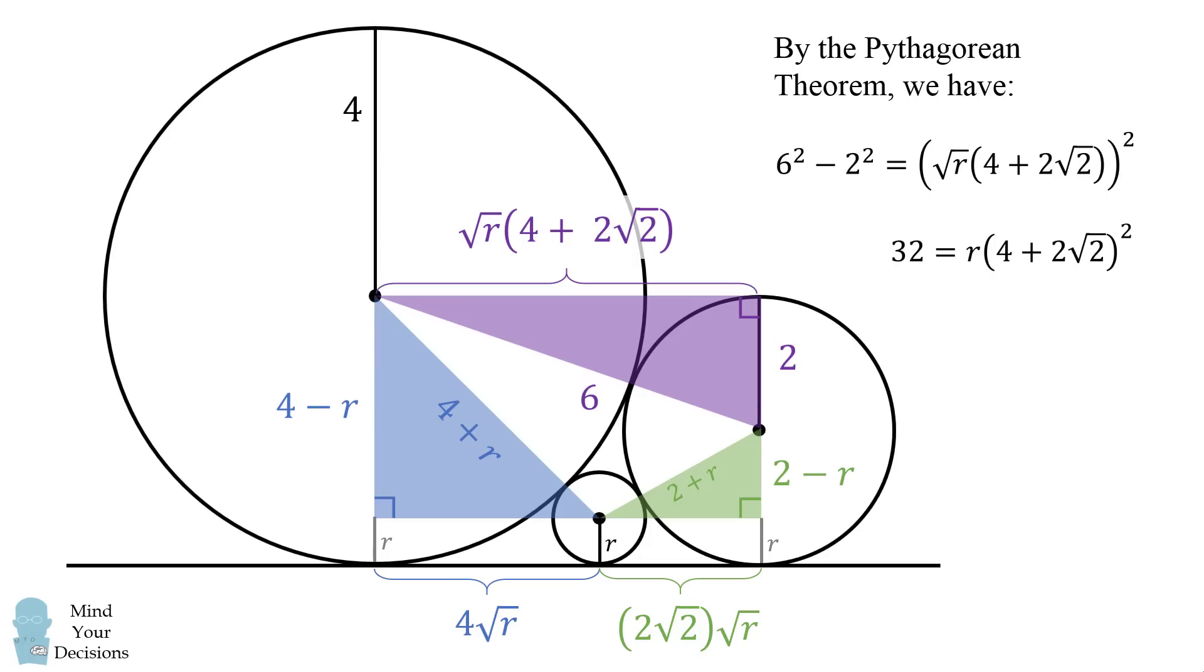And you'll end up rationalizing this fraction, and you'll get that r is equal to 12 minus 8 times the square root of 2, and that's our answer. So that's our answer for these specific lengths.